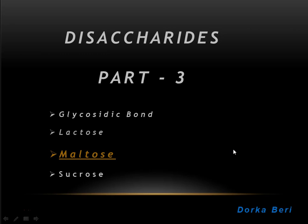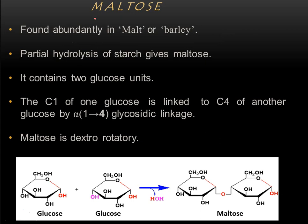After learning lactose, it is very easy to discuss and understand the structure and properties of maltose. Today's molecule is maltose — we will discuss the structure as well as its properties in this short video. Maltose is found abundantly in malt or barley, that is why it is called maltose. It is a disaccharide because it is made of two glucose units.